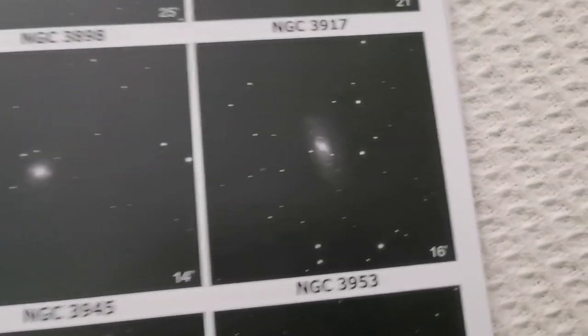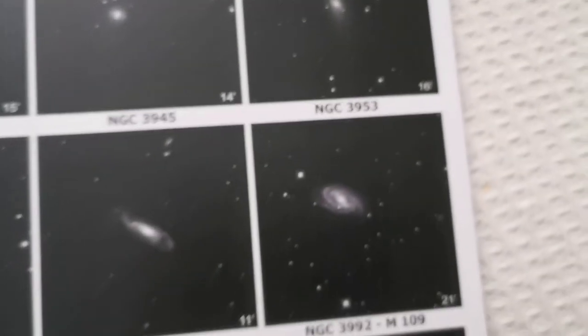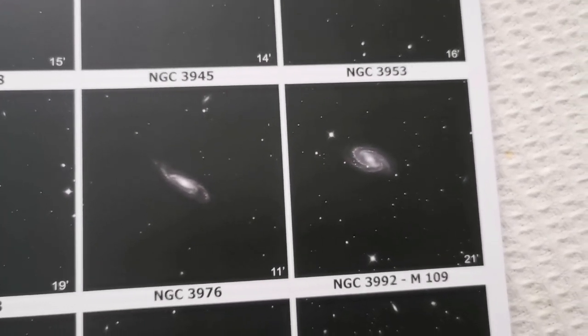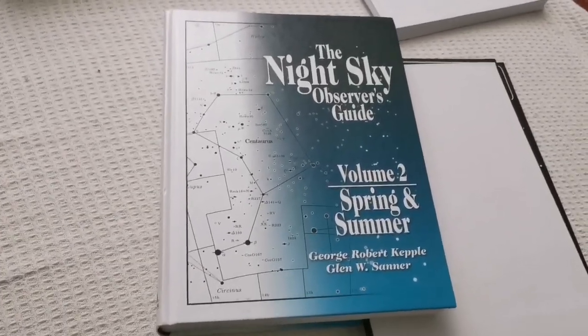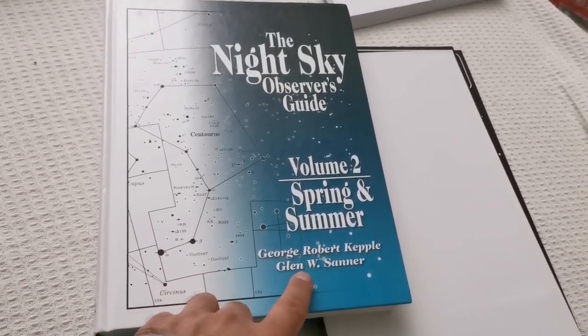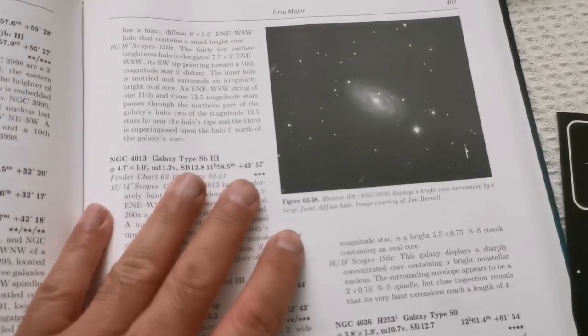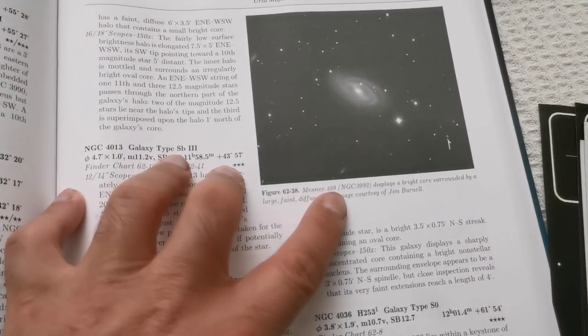Having one source is not good, you have to have multiple sources. We can see NGC 3992, which is M109, here. If I refer to the Night Sky Observer's Guide Volume 2, Spring and Summer by George Robert Keppel and Glenn W. Sanner, you come to this page.